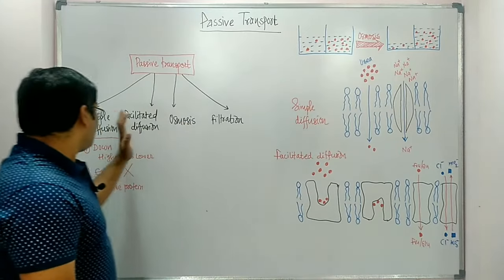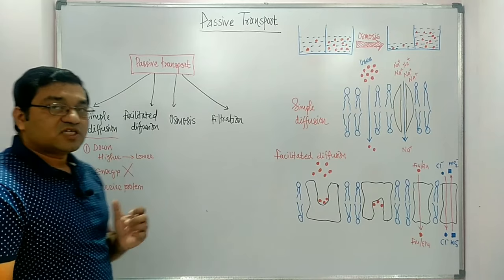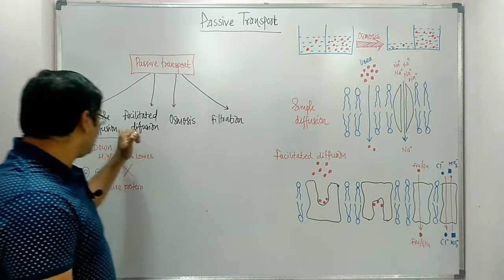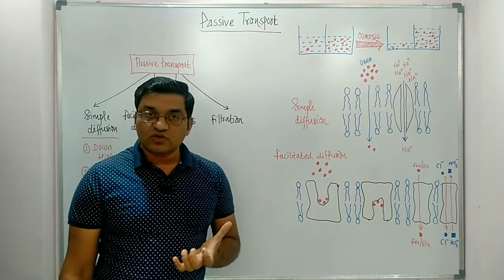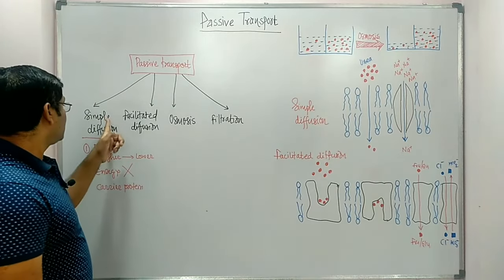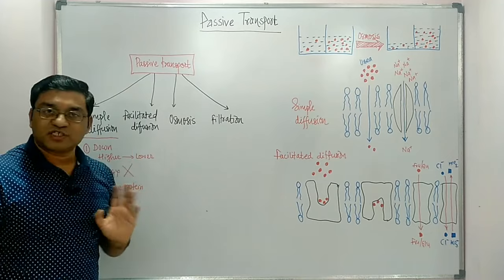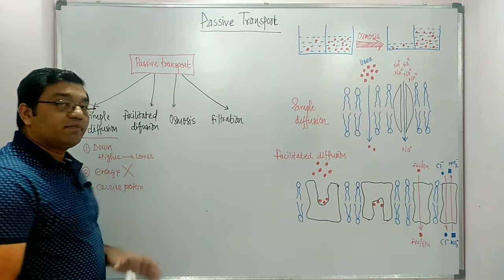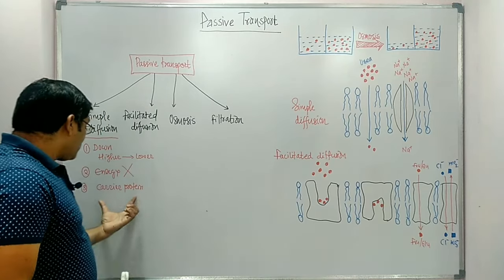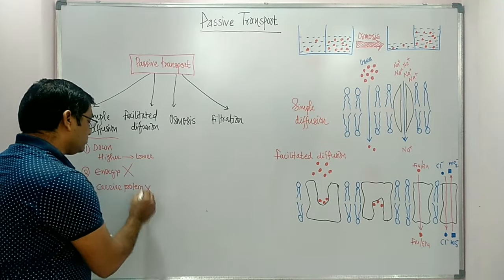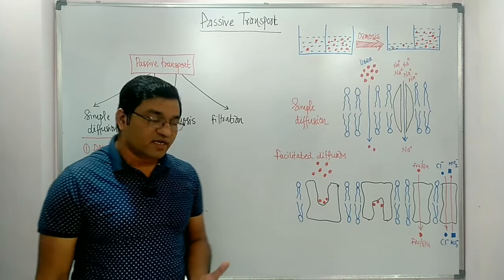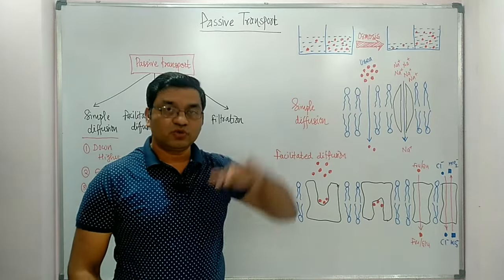Coming to Simple Diffusion — it is the transport of molecules down the concentration gradient, from higher concentration to lower concentration. Energy is not required. Carrier proteins are also not required for Simple Diffusion; it is a simple transport of molecules across the membrane without any carrier mediation.